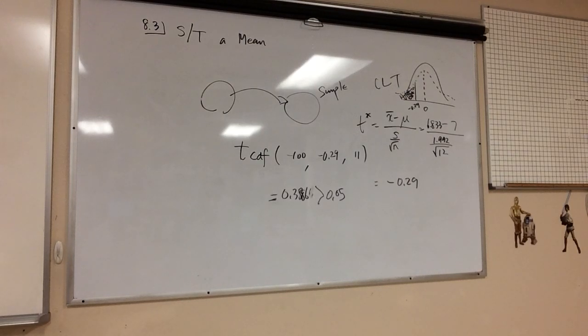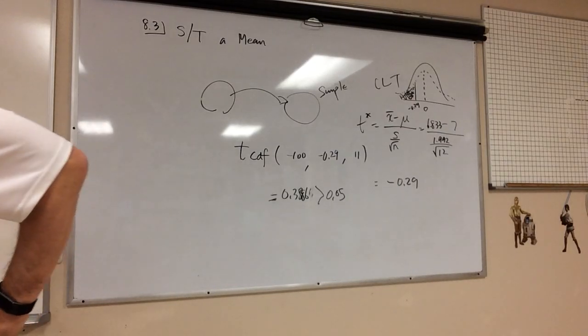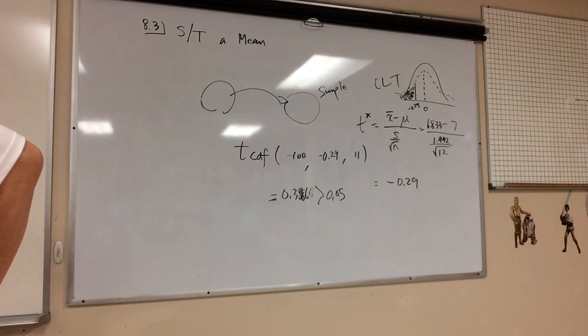So there you go. So step seven says because the p-value is greater than alpha we fail to reject the hypothesis. Flip the page. And I think we will stop right here. Actually, you know what? Let's go ahead and do the t-test.